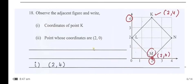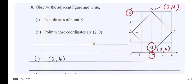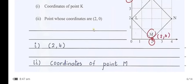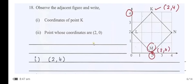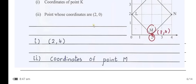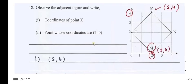Observe the adjacent figure and write the coordinates of point K. The coordinates of point K are (2, 4). The point whose coordinates are (2, 0) will be the coordinates of point M, as seen in the diagram.